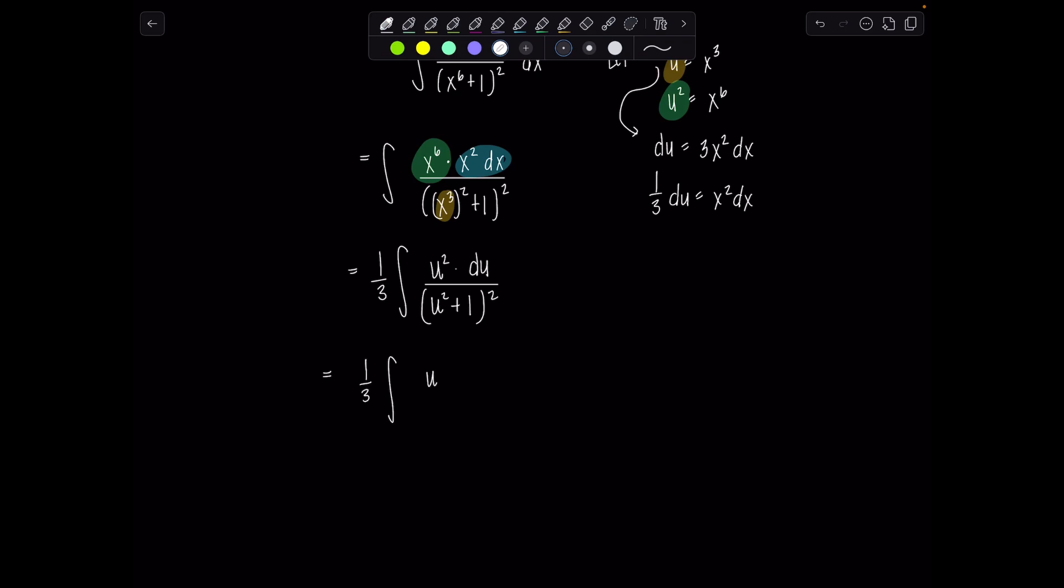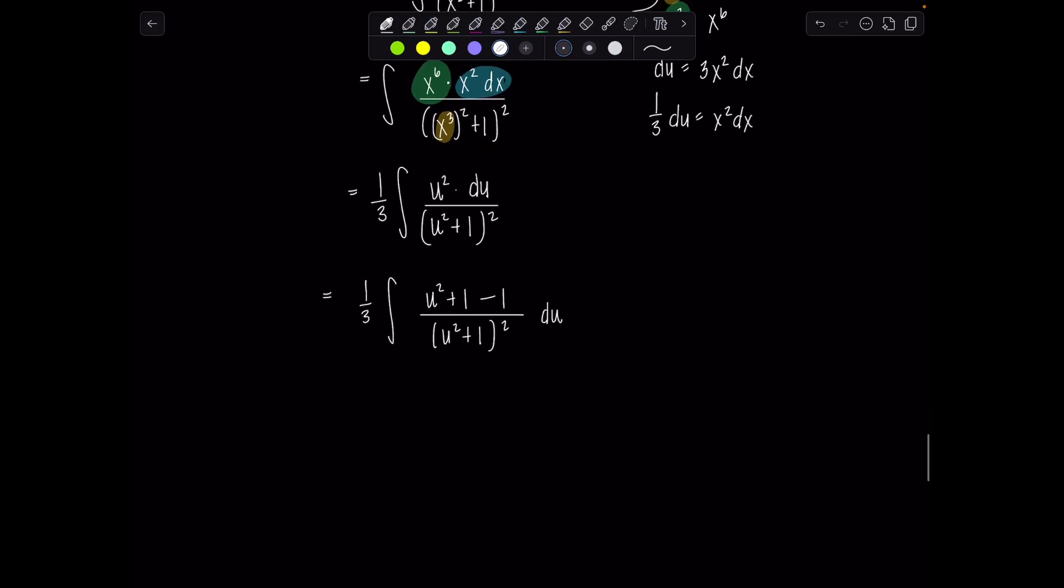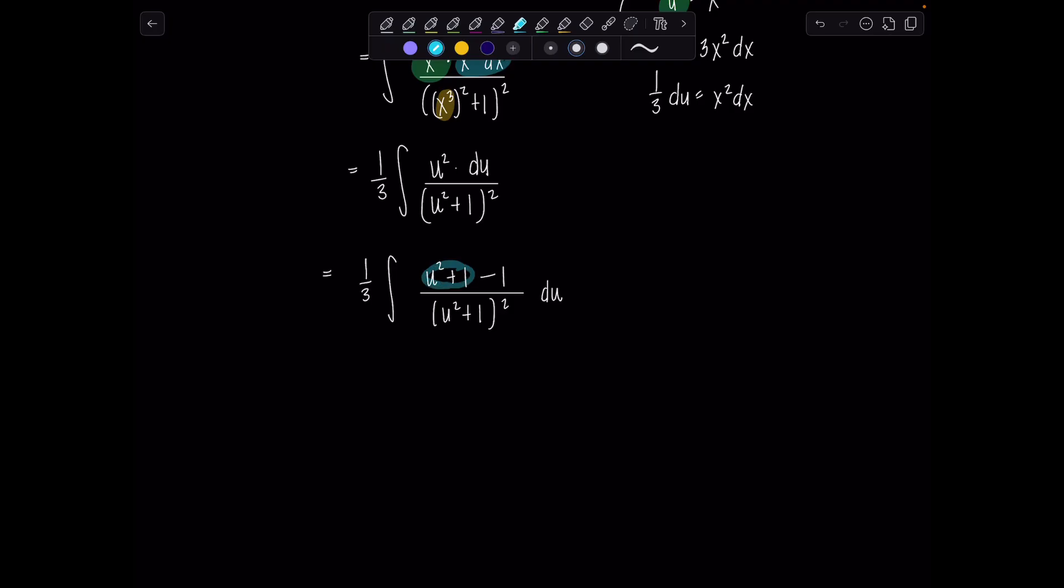We're going to come in and we're going to add one and subtract one in the numerator, and then simplify from there. And we're going to get the same result as if we had sat there and done partial fractions. So you add one and subtract one because you want to get an expression that matches what's in the denominator. And we're going to split this up now into two terms. So we're going to have one third integral u squared plus one over u squared plus one squared minus one over u squared plus one squared du. How are we doing?